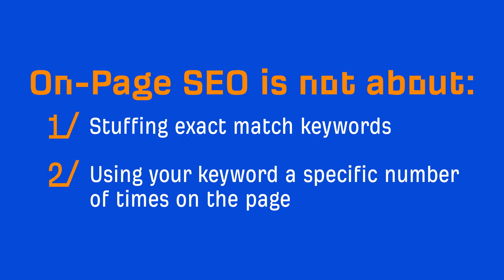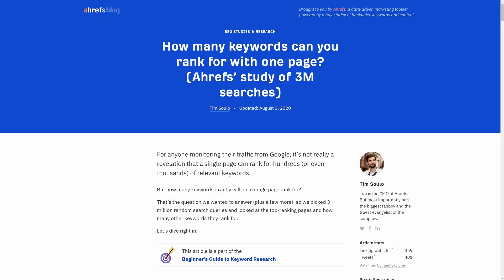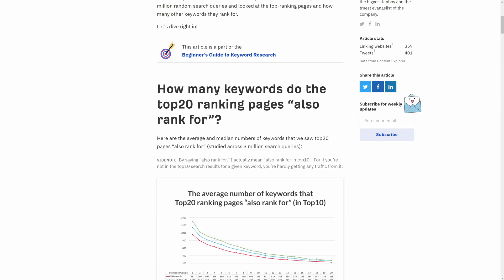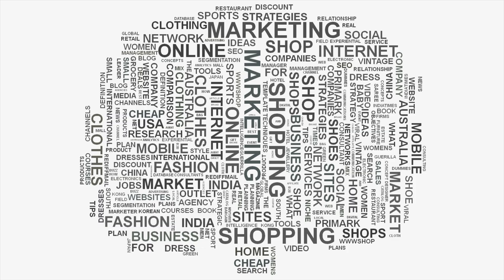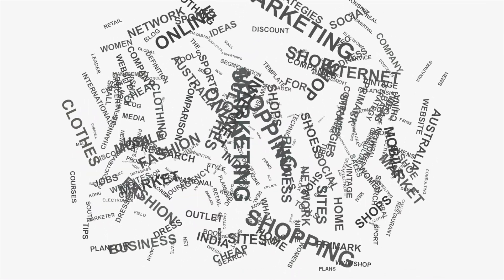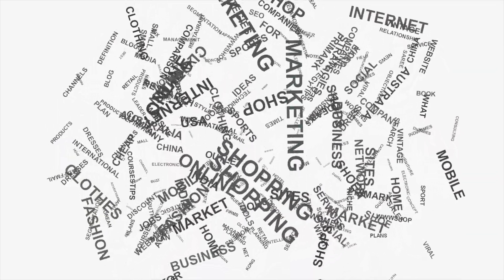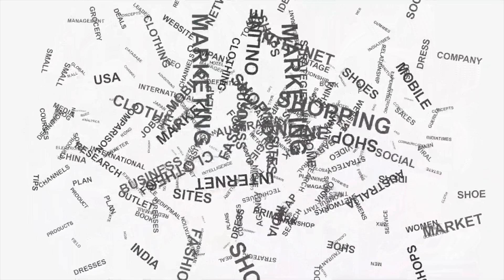The second thing is that on-page SEO is not about using your keyword a specific number of times on the page. In our study of 3 million search queries, we found that on average the top-ranking page ranks for around 1,000 other relevant keywords in the top 10. Can you imagine what it would be like if a top-ranking page had to mention all 1,000 of those keywords at least 3 times? It makes no sense.